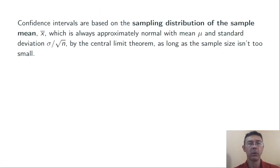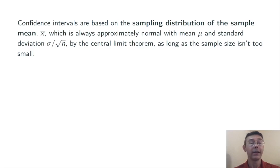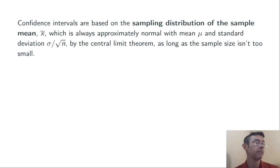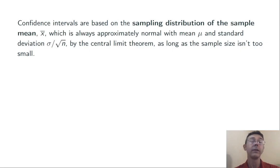So let's talk about where that formula comes from. Confidence intervals for the population mean are based on the sampling distribution of the sample mean, x-bar. You have to imagine going out and collecting many, many samples of the same size and getting a sample mean x-bar for each one, giving you a whole distribution of different values of x-bar. The central limit theorem says that distribution is approximately normal, with mean mu and standard deviation sigma divided by the square root of n, as long as the sample size n isn't too small.